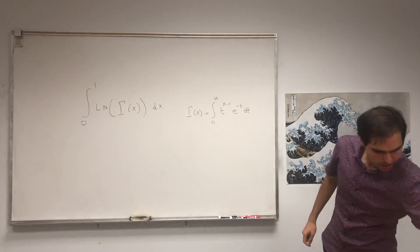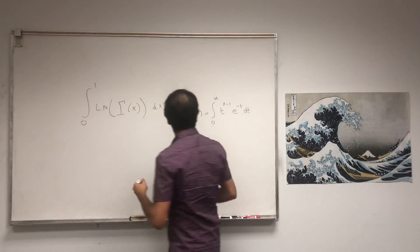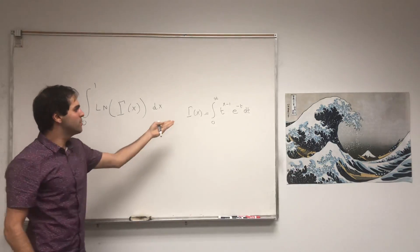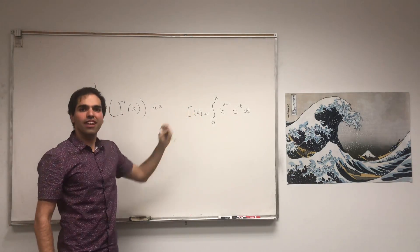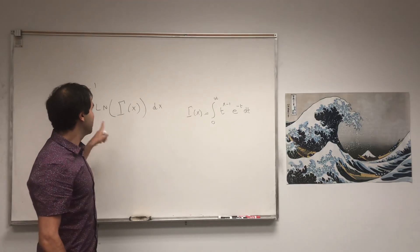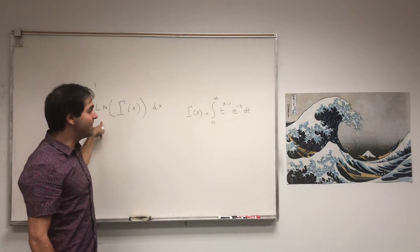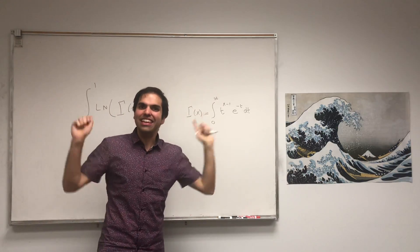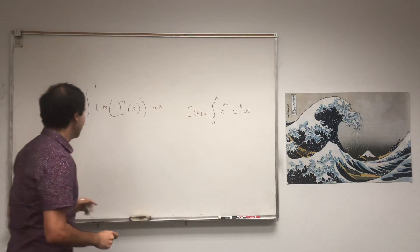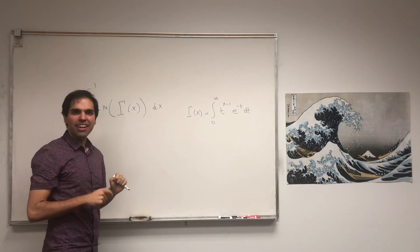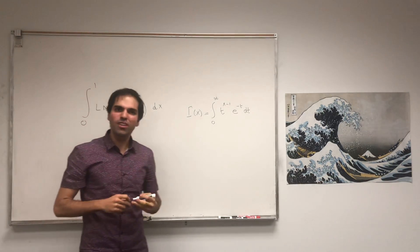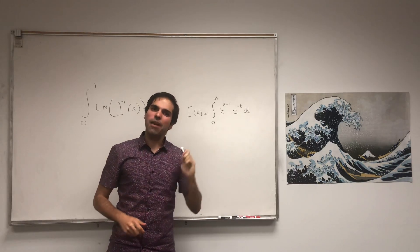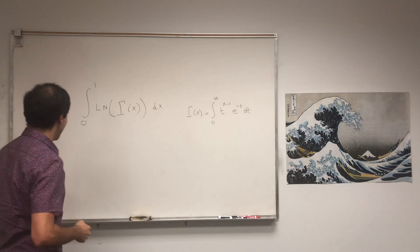It's a weird shifting thing with the x minus 1, but really it's supposed to behave like the factorial. Today, we're going to calculate the integral of ln of that. It seems crazy, but it's actually super elegant, because we're not going to do this directly. We're going to use one of the formulas that's very important with the gamma function, which is called the Euler Reflection Formula.